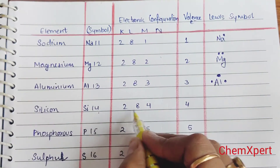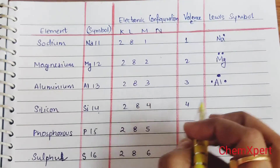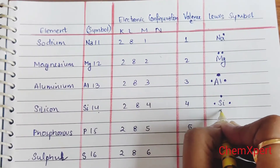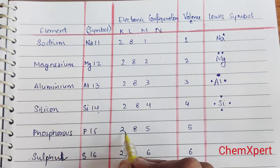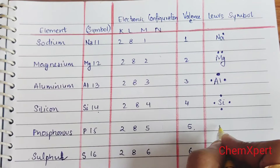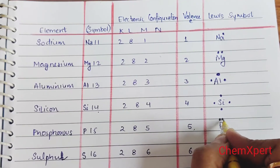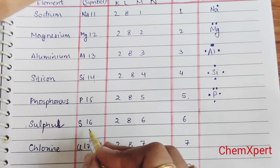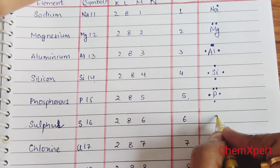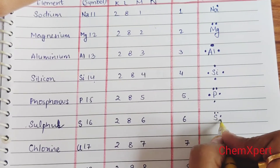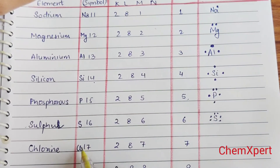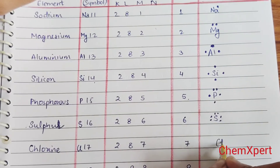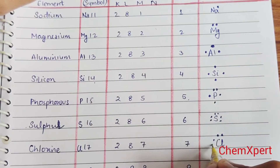Silicon, atomic number 14, has configuration 2, 8, 4. The valence shell contains 4 electrons, so the Lewis symbol has 4 dots surrounding Si. Phosphorus, atomic number 15, has configuration 2, 8, 5. The outermost shell contains 5 electrons — written with 1 pair and 3 single dots. Sulfur, atomic number 16, has configuration 2, 8, 6. The valence shell has 6 electrons, so we write 6 dots. Chlorine, atomic number 17, has configuration 2, 8, 7. The valence shell has 7 electrons, so we write 7 dots surrounding Cl.